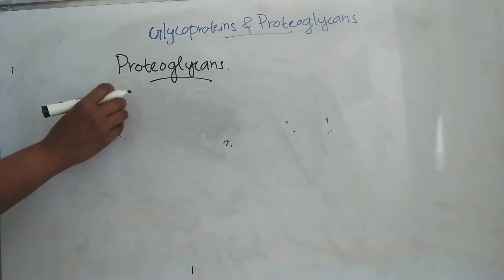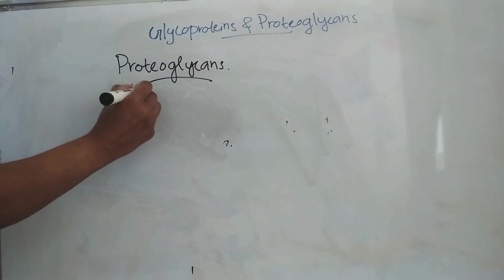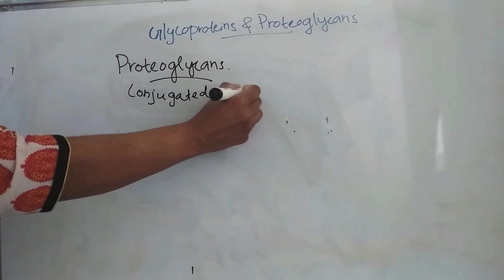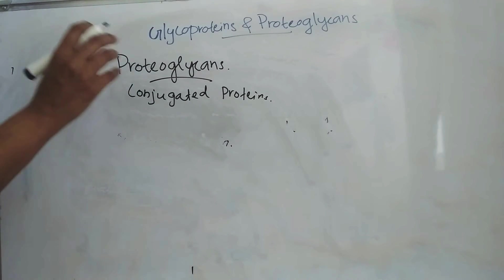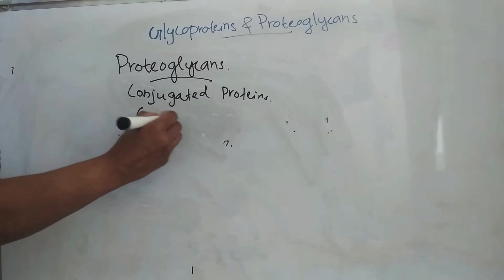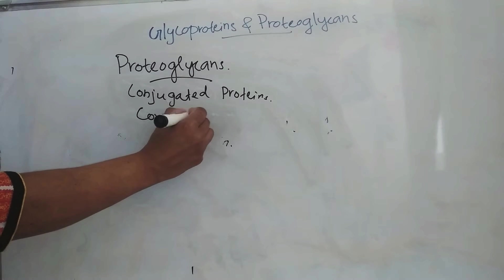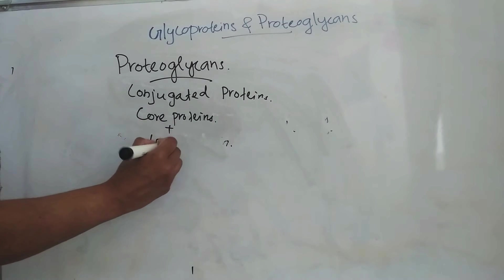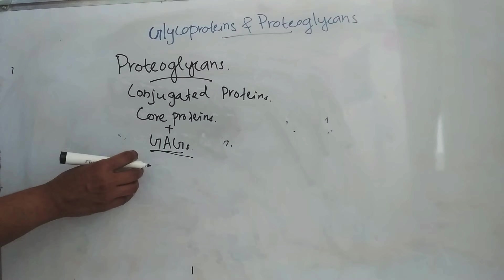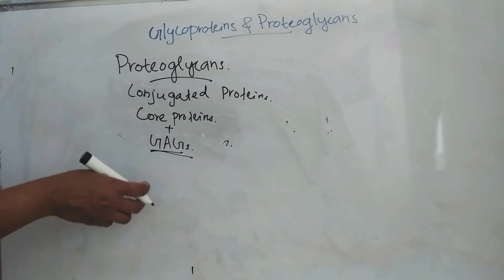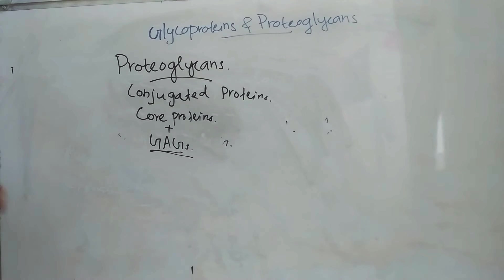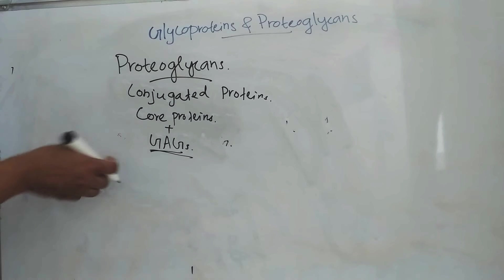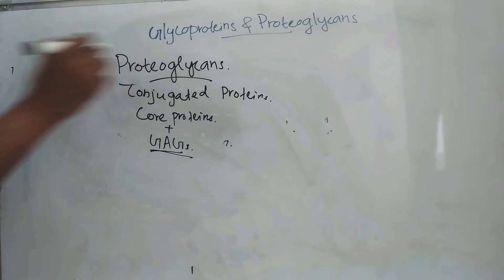Proteoglycans are conjugated proteins. Here, proteins are called core proteins. These core proteins are commonly linked to glycosaminoglycans. Glycosaminoglycans include keratin sulfate, heparin sulfate, or hyaluronic acid, etc. These — heparin sulfate, keratin sulfate — can all take part in proteoglycan formation.